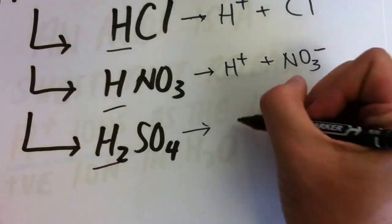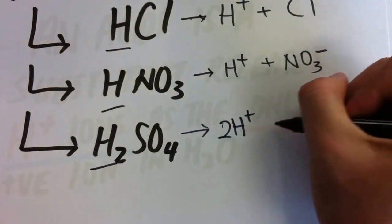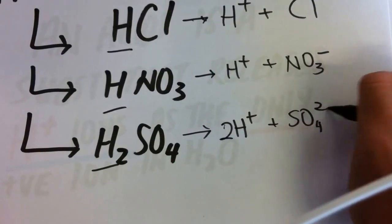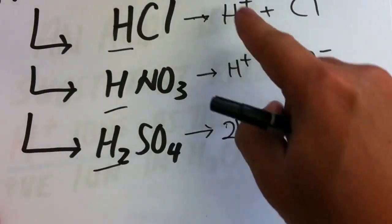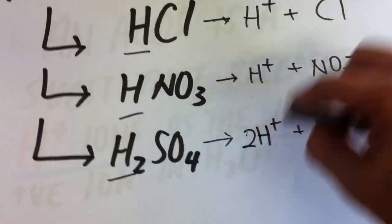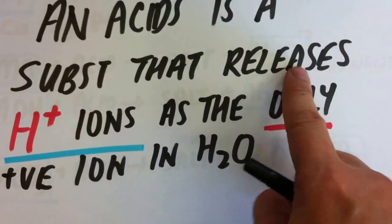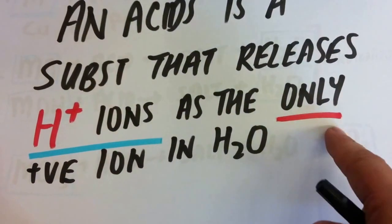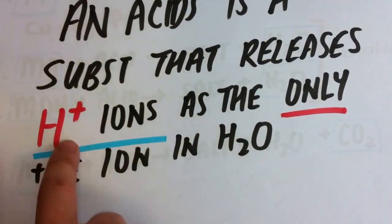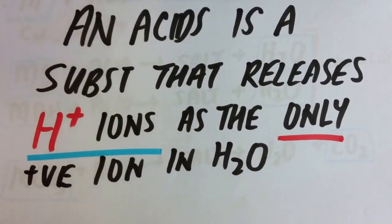And H2SO4, you get 2H plus. Remember, the charge still remains the same. Plus SO4 2 minus. So generally, what are acids? An acid is basically a substance that releases H plus ion as the only positive ions in water.